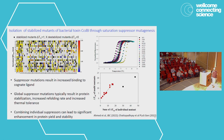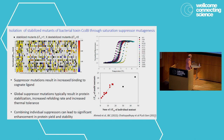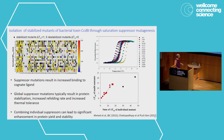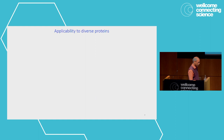These kinds of global suppressors typically result in protein stabilization. Biophysical studies show that they typically increase the refolding rate, and the thermal tolerance — that is, the amount of time you can expose the protein to high temperature — increases considerably, even if the thermal stability increase is modest. You can combine individual suppressors to get larger increases in stability.